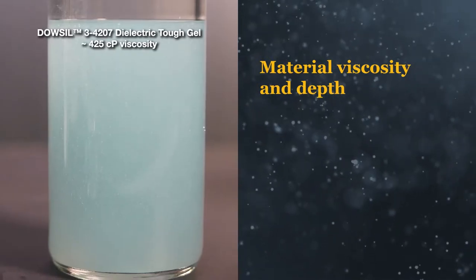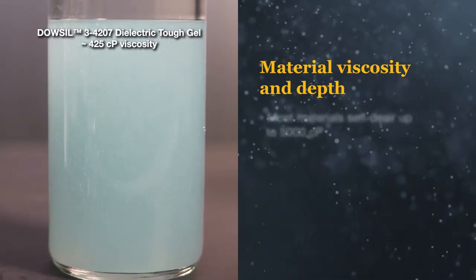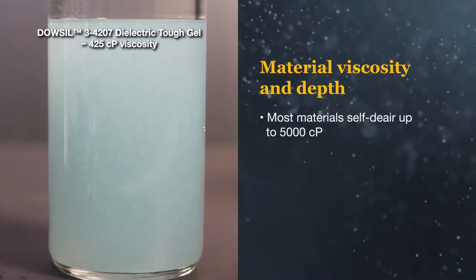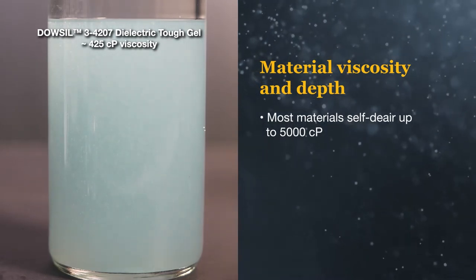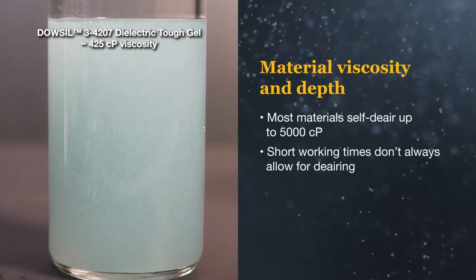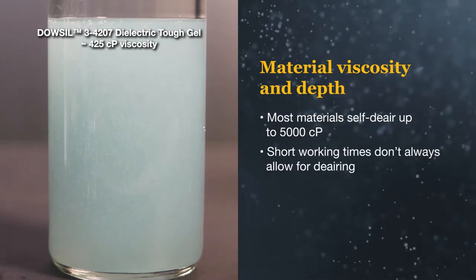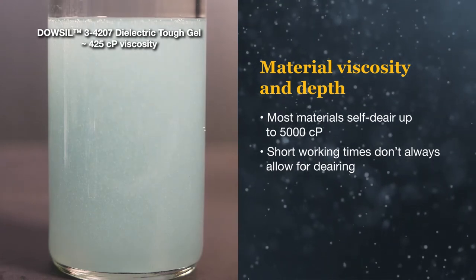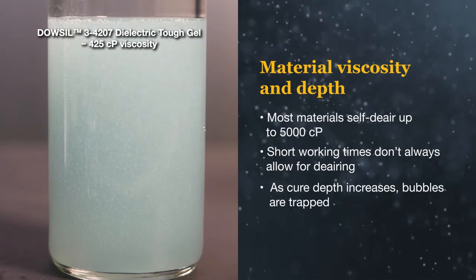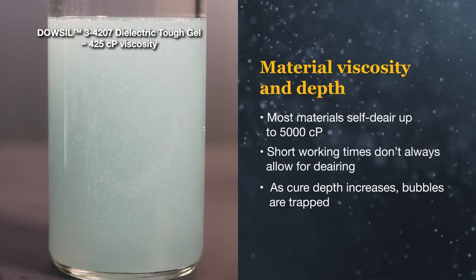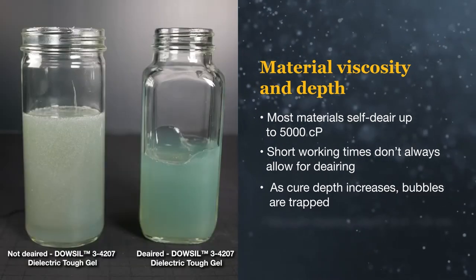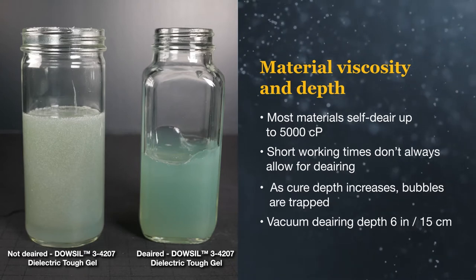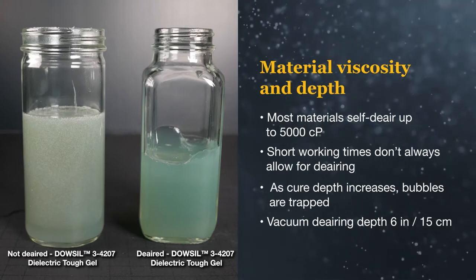When looking at viscosity and material depth, most materials with viscosities below 5,000 centipoise will self-de-air within a few minutes. However, products with very short working times, or that skin over very fast, may not allow enough time for all bubbles to reach the surface. This becomes even more apparent when cure depth increases. Vacuum de-airing can help aid the process for products with short working times, but is limited to a depth of around 15 centimeters.